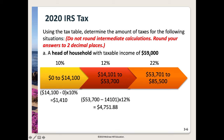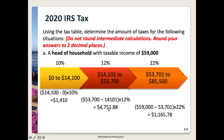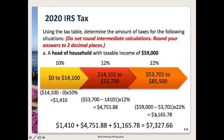With $59,000 in taxable income, we move up to the 22% bracket, which covers income between $53,701 and $85,500. Since our taxpayer makes $59,000, that's the top end for us. We take $59,000 minus $53,701, multiply by 22%, and get $1,165.78. Adding all three bracket amounts together, the total taxes owed is $7,327.66.